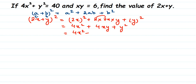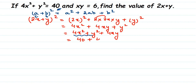Rearranging the terms, this equals 4x² + y² + 4xy. If you look here, 4x² + y² — we know the value of these two terms; it's given in the question: 4x² + y² = 40. Substituting, this becomes 40. In the last term we have 4xy, and the value of xy is also given in the question as 6, so we have 4 × 6.